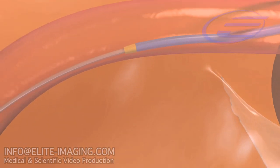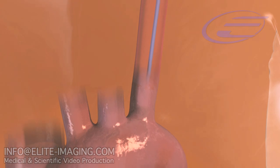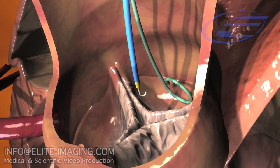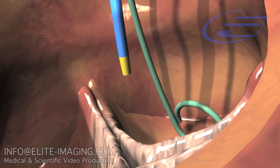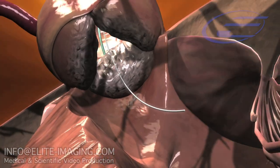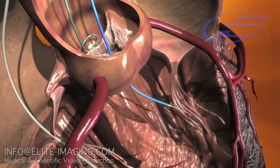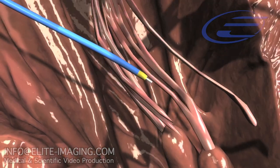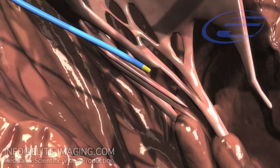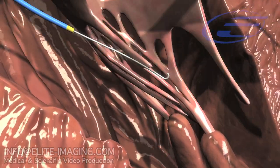Insert the angiographic catheter over the guide wire and advance both to the aortic valve under fluoroscopic guidance. Switch the standard guide wire for a 0.035 J-tip guide wire and advance it across the aortic valve into the left ventricle. After crossing the native aortic valve, advance the angiographic catheter into the left ventricle. Switch the straight tip wire for an exchange length 0.035 J-tip guide wire, then exchange the angiographic catheter for a 6 French pigtail catheter.